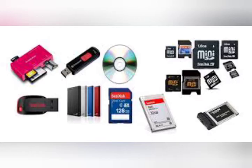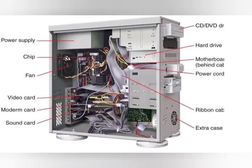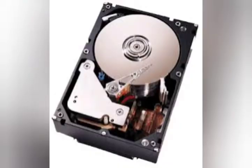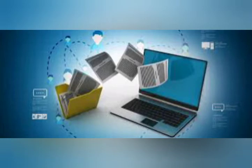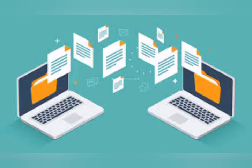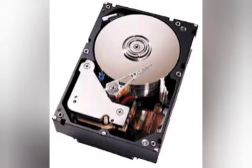One is internal storage devices and another one is external storage devices. Internal storage devices are the devices used inside the system unit. The system unit for a computer is the CPU. The device used to store data inside the computer — we call it the system unit. An example of an internal storage device is the internal hard disk.